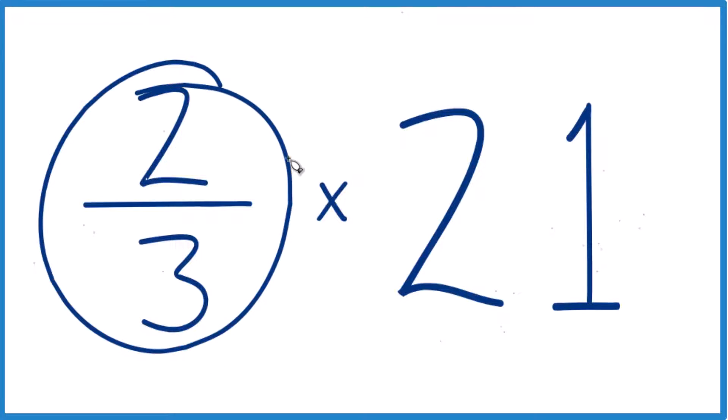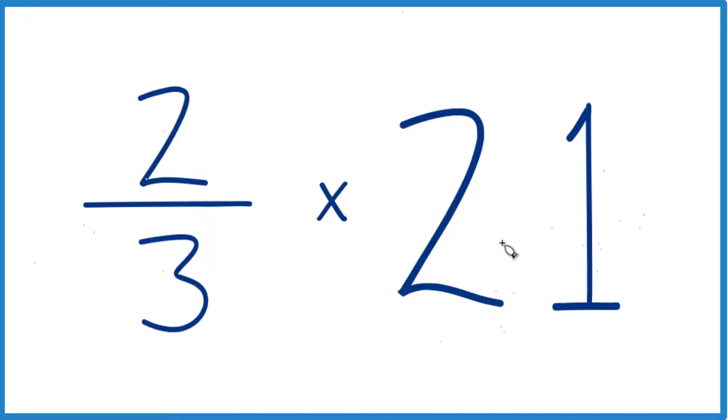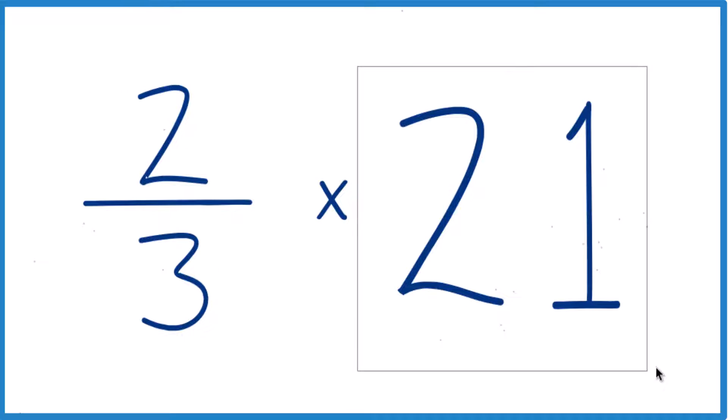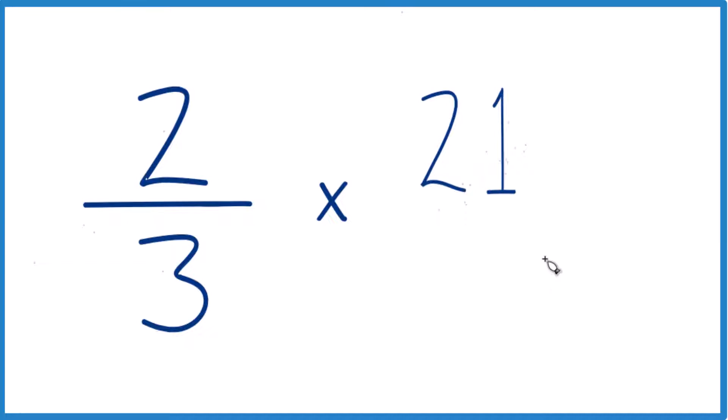So we have two-thirds times 21. So how do we do that? Probably the easiest thing to do is take this 21 here, and instead of 21, we're going to call it 21 over 1.